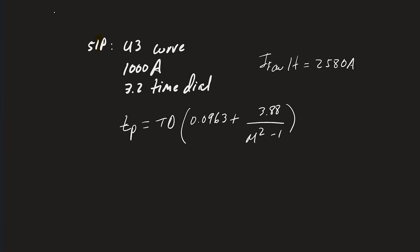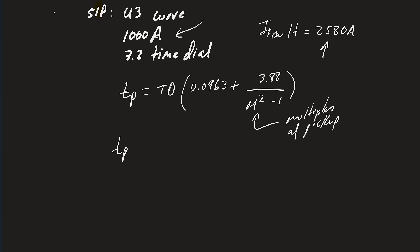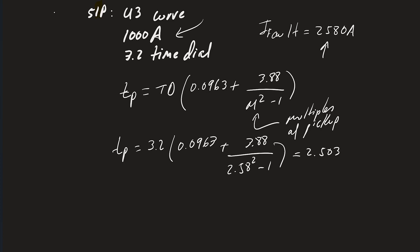In our case the pickup is 1000 amps, so dividing the fault current of 2580 amps by 1000 gives us M equals 2.58. Now we plug in: trip time equals 3.2 times (0.0963 plus 3.88 divided by 2.58 squared minus 1). This gives us a trip time of 2.503 seconds.